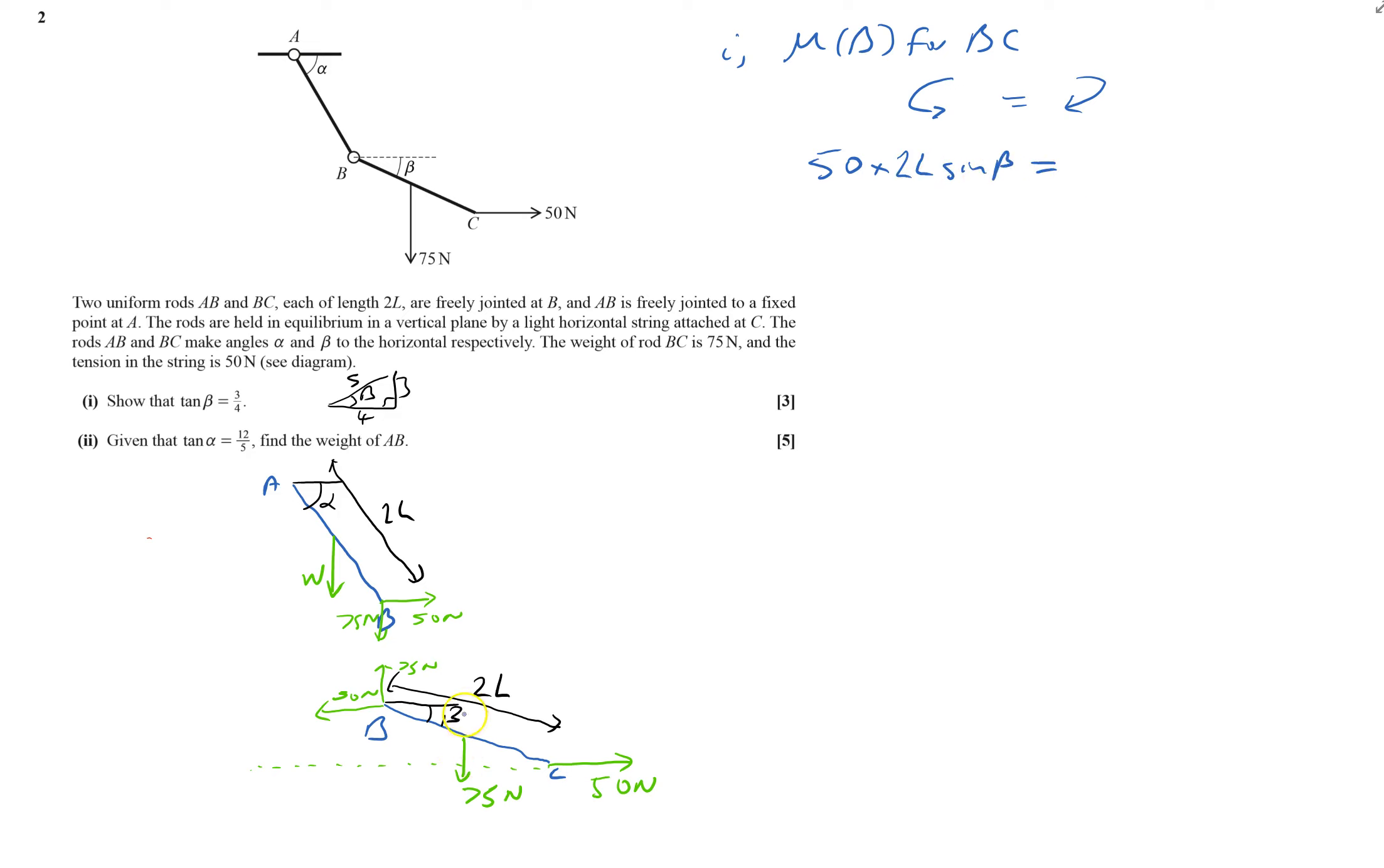And that equals my clockwise moment, which is just this 75 newtons. So 75 newtons times by, again if I dot that back, the distance I've got is this horizontal distance there, which will be the length will be just L, because it's only half the way along. So it'll be L cos beta. So that'll be times by L cos beta.